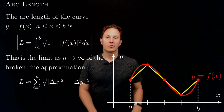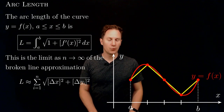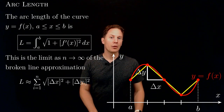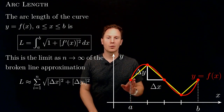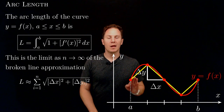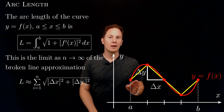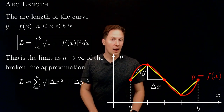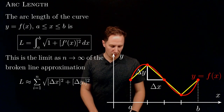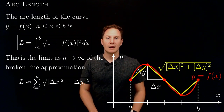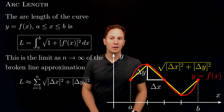Therefore we obtain points on the graph of the function that we can connect using straight line segments. Each straight line segment is the hypotenuse of a right triangle with legs of length delta x and delta y. Delta x is the length of each subinterval, and delta y is the change in the values of the function between the two points on the graph.